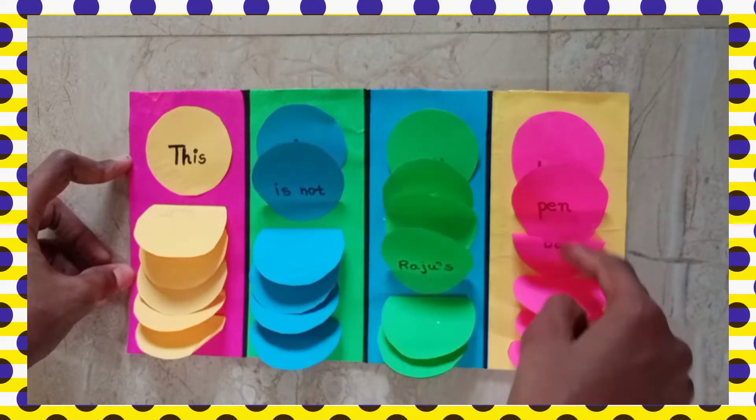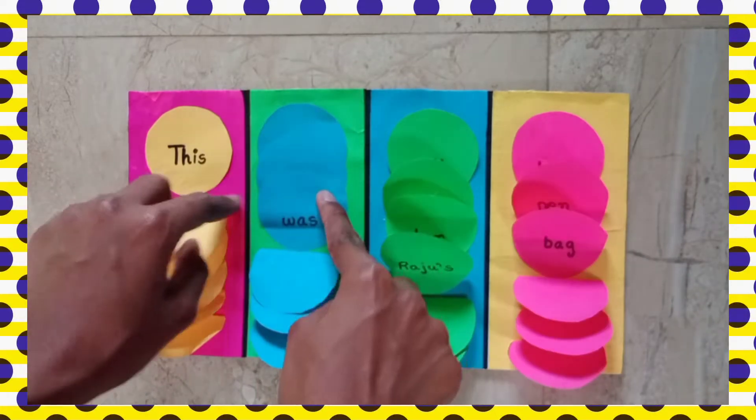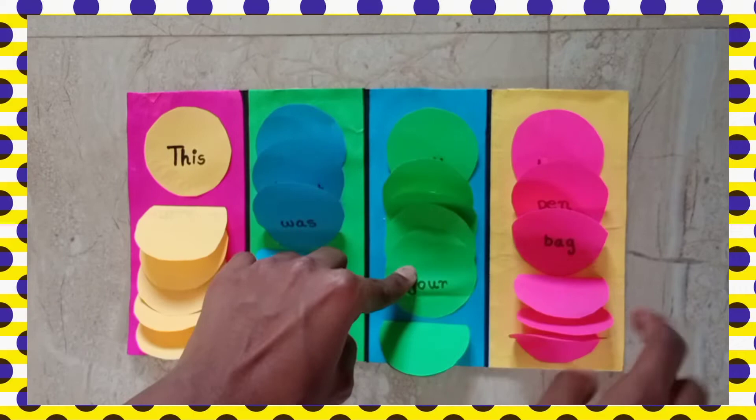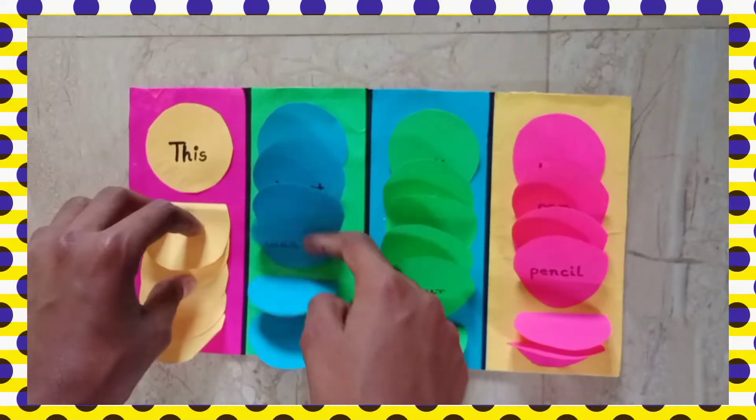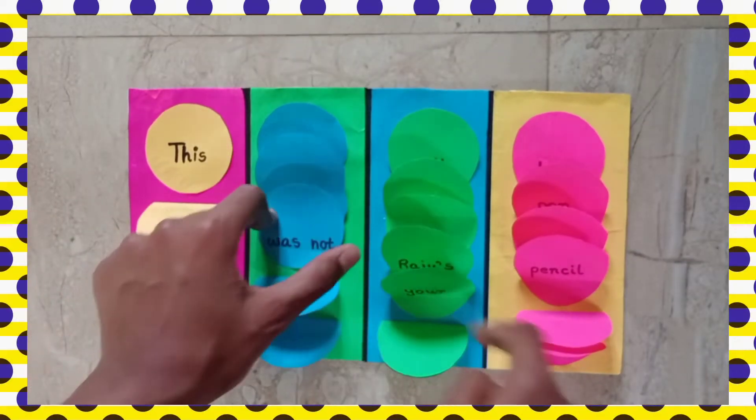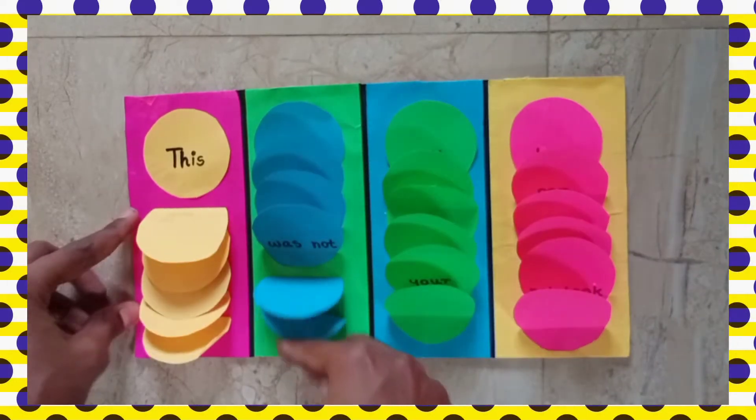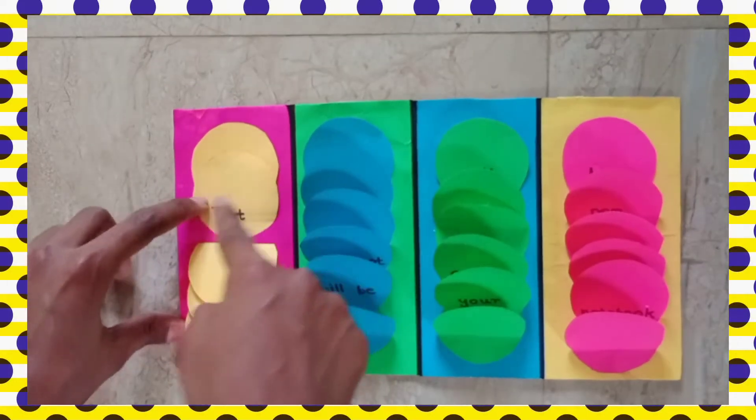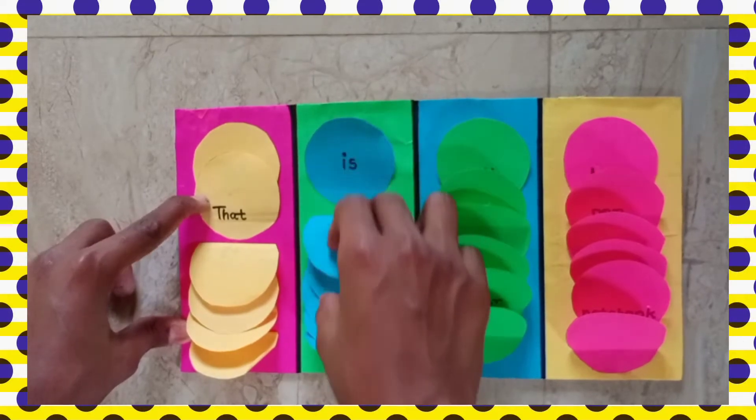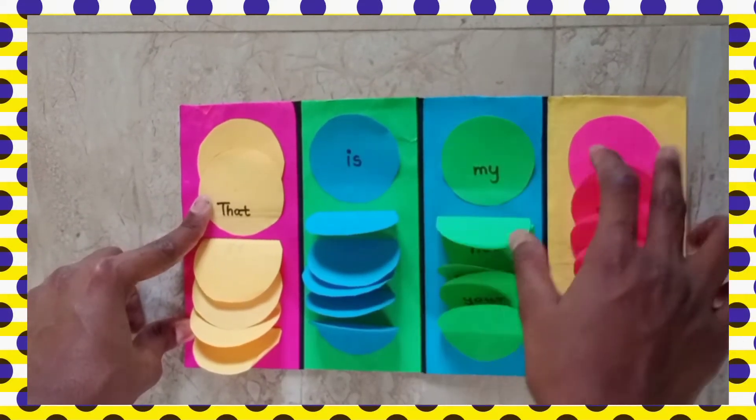This is not Raju's bag. This was your pencil. Like this, if we change any word, it changes the sentence, which means it forms a new sentence. Now let us change yellow color words: That is my book.